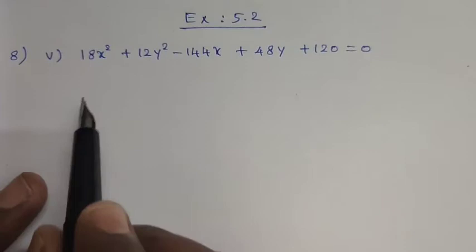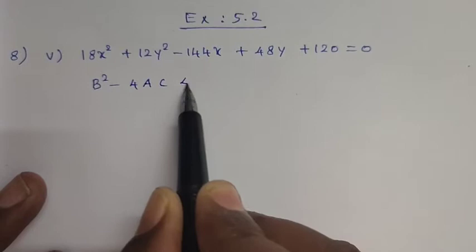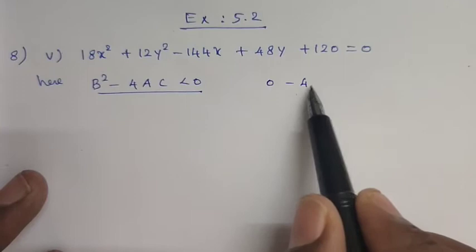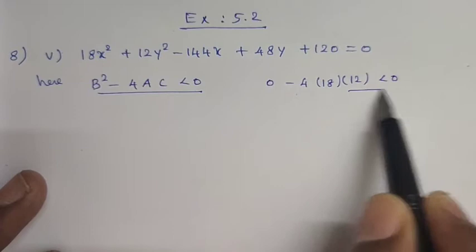The concept uses b squared minus 4ac. If b squared minus 4ac is less than 0, then we check b. Here b is 0, which is the xy term. Now 4a is 18 and c is 12, so we can identify this as an ellipse.